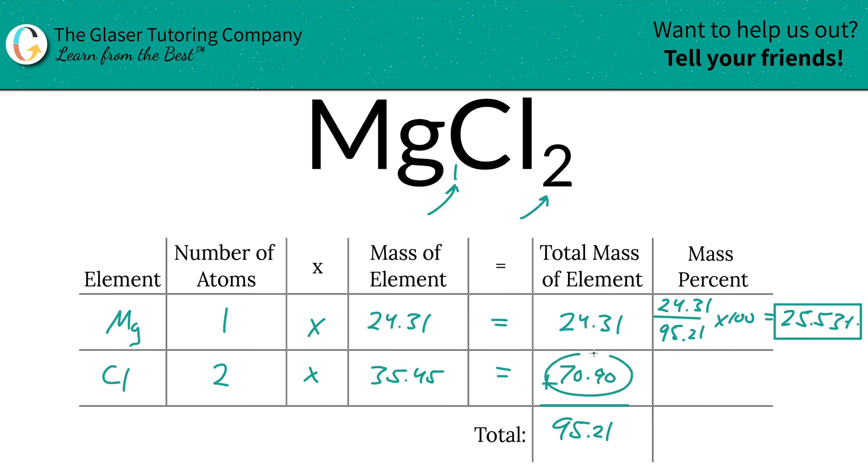Same thing for chlorine now. Take the total amount of chlorine, 70.90, divided by the total of the entire compound, multiply that by 100, and the percent is going to be 74.47.